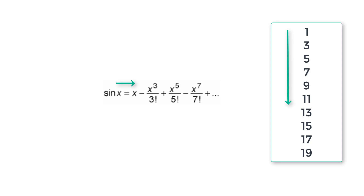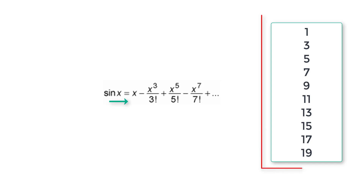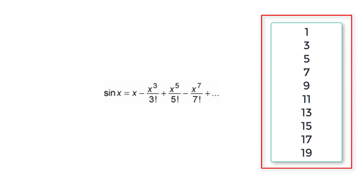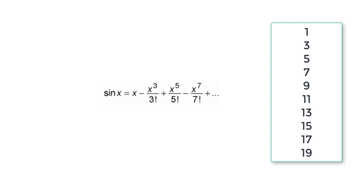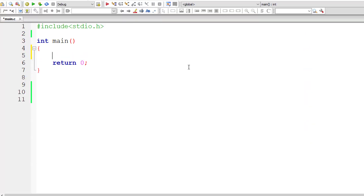We will use a for loop to iterate and increment the loop counter variable from 1 to 19, and use the same number to calculate the factorial of each term. Also note that the first term is positive, the next is negative, then positive, then negative — so the sign alternates after the first term.